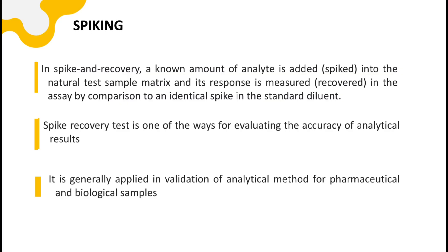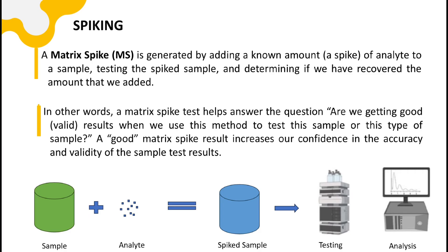It is generally applied in validation of analytical methods for pharmaceutical and biological samples. Let us understand spiking in more detail. We are generating a spiked sample, also called a matrix spike, by adding a known amount of analyte to a sample. The spike sample is then tested and the results are analyzed to determine if we have recovered the amount that we added. This is why it is called a spiked sample — because we are intentionally adding a known amount of analyte.